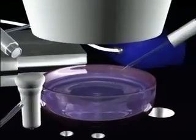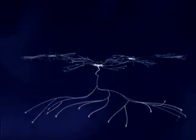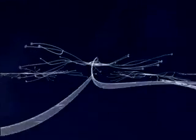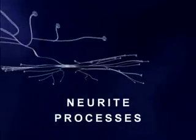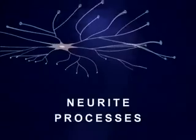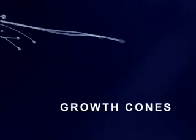To better understand mercury's effect on the brain, let us first illustrate what brain neurons look like and how they grow. In this animation, we see three brain neurons growing in a tissue culture, each with a central cell body and numerous neurite processes. At the end of each neurite is a growth cone where structural proteins are assembled to form the cell membrane.